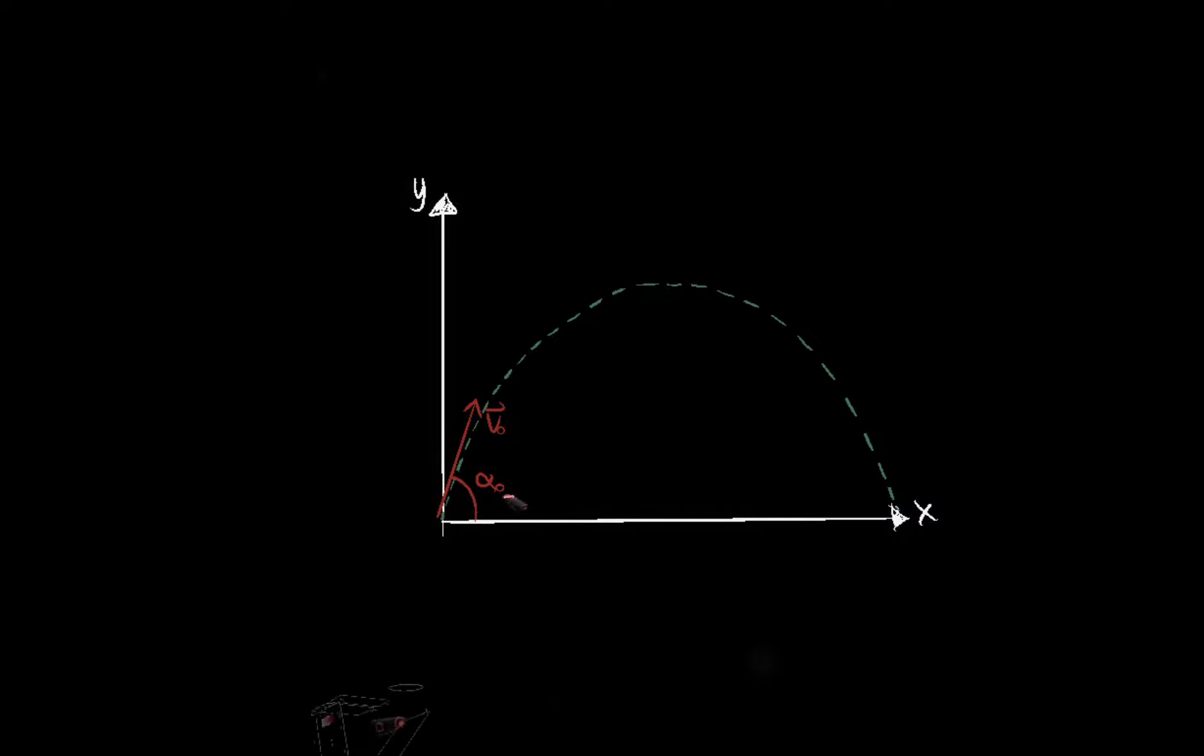And so this initial velocity vector can be broken up into its component x and y vectors. And so this would be v naught y, or v y naught, and this would be v naught x.